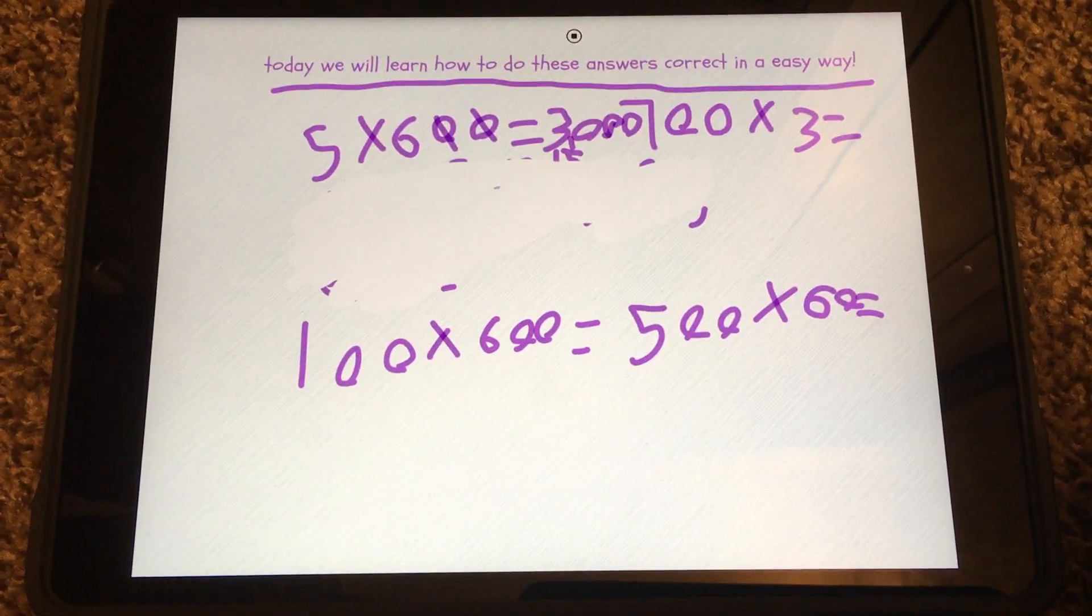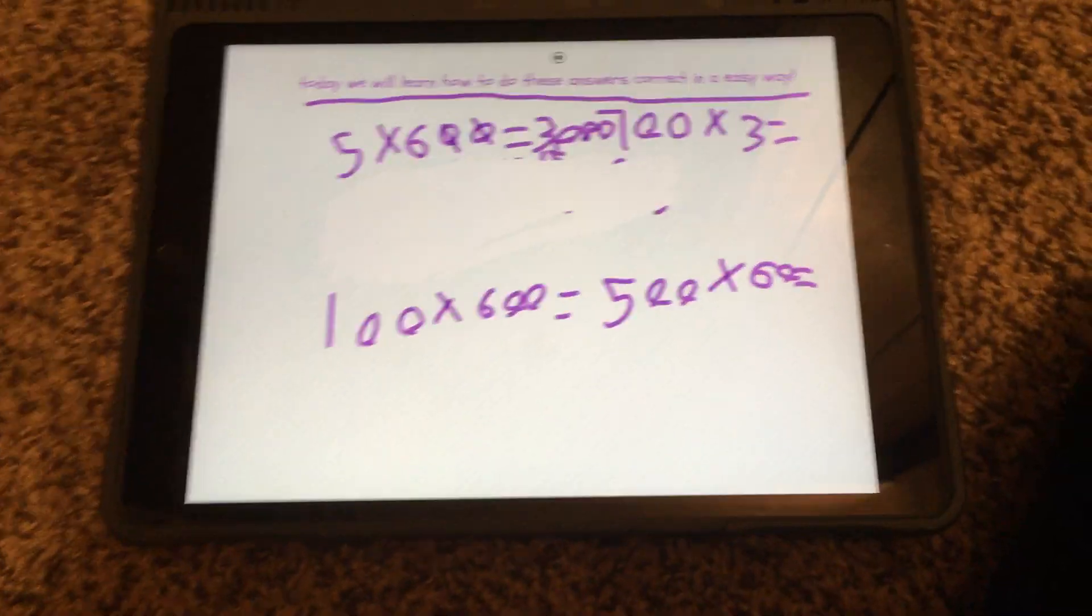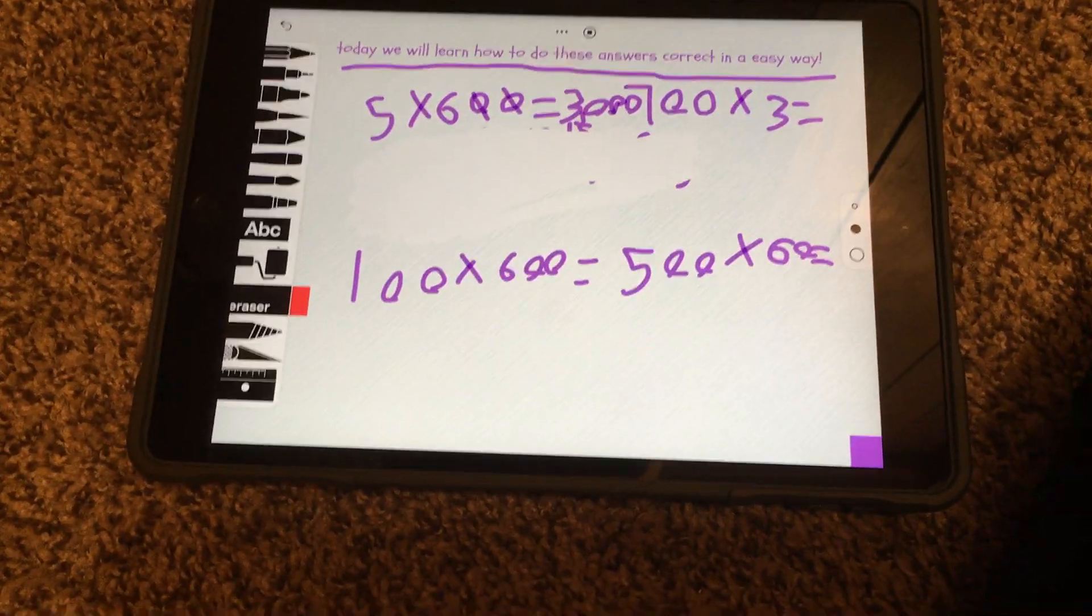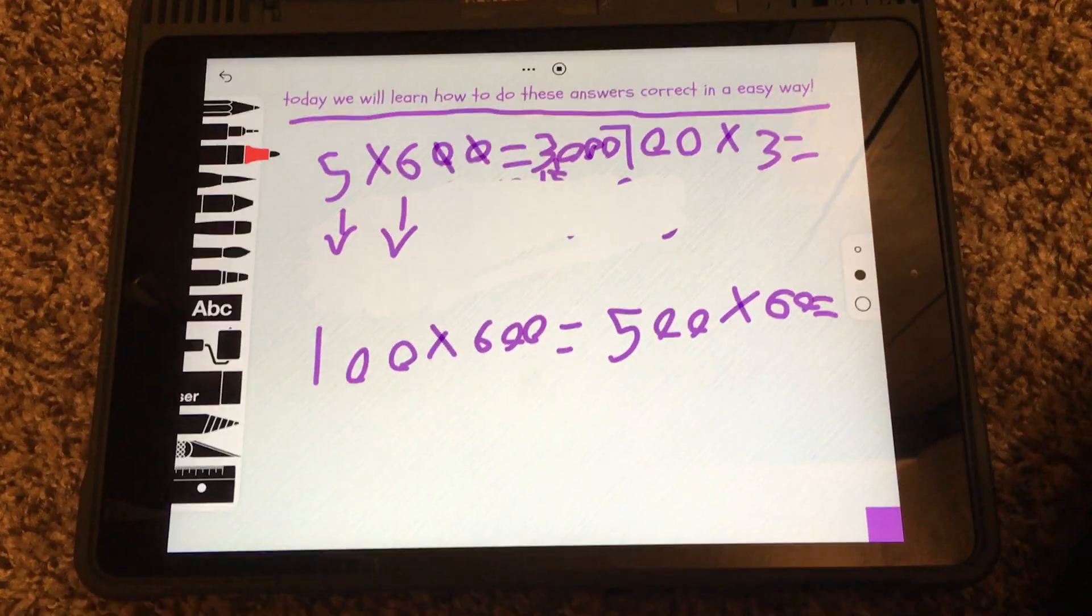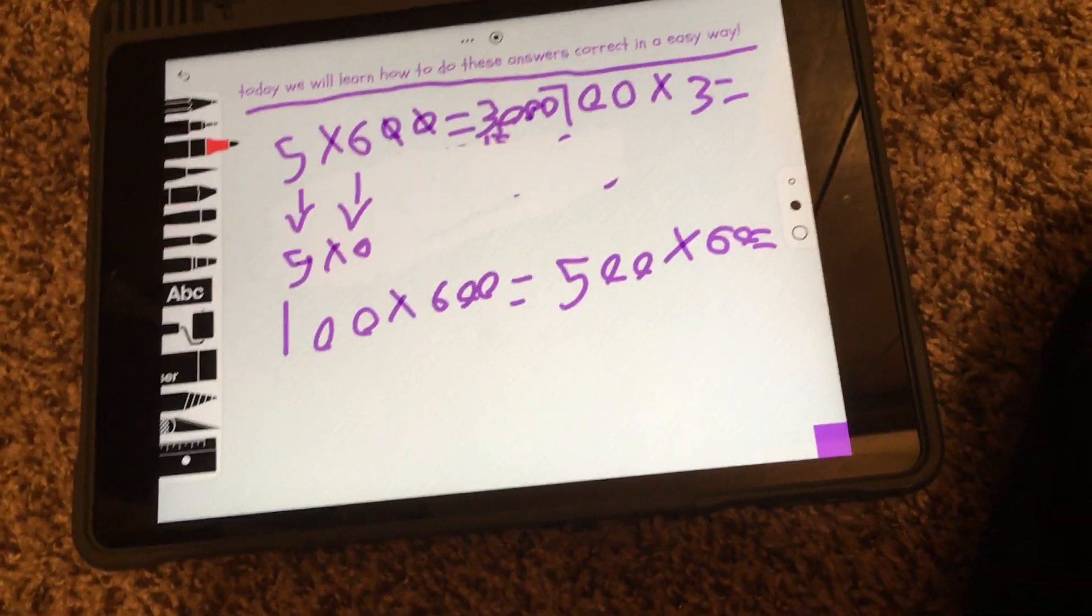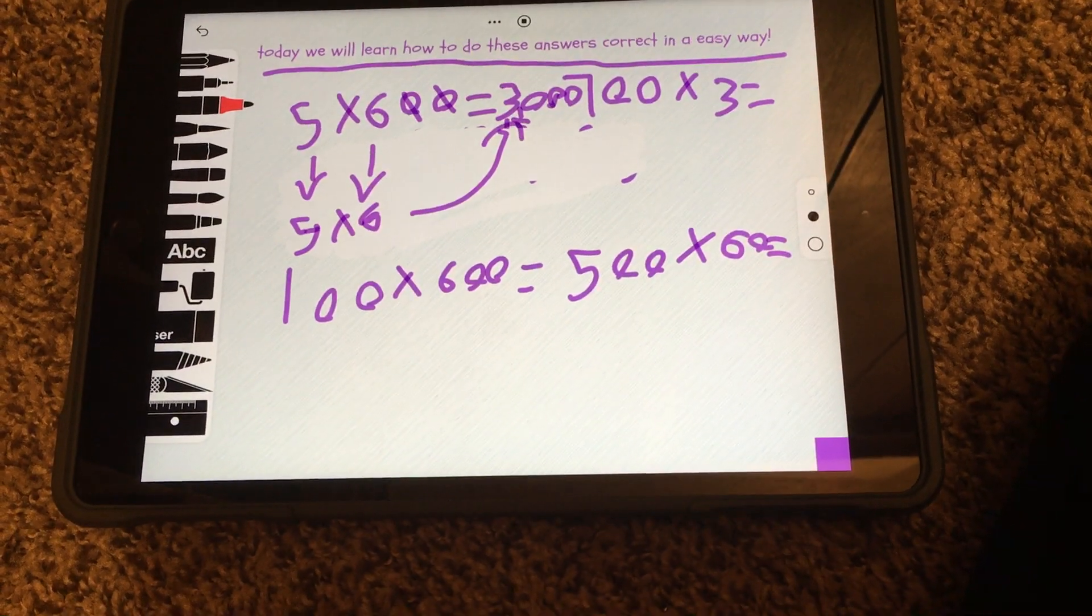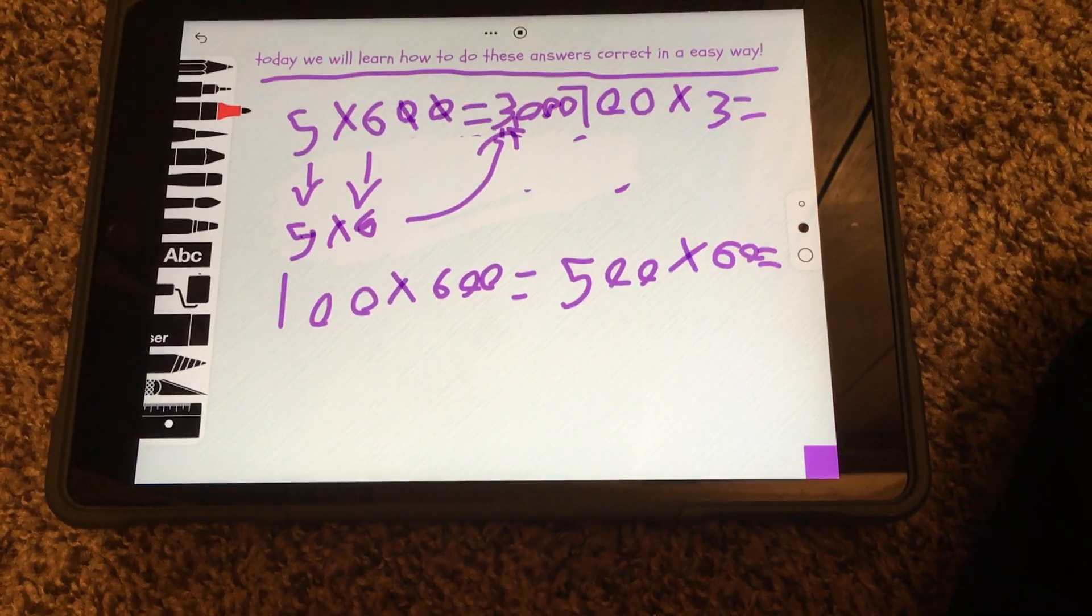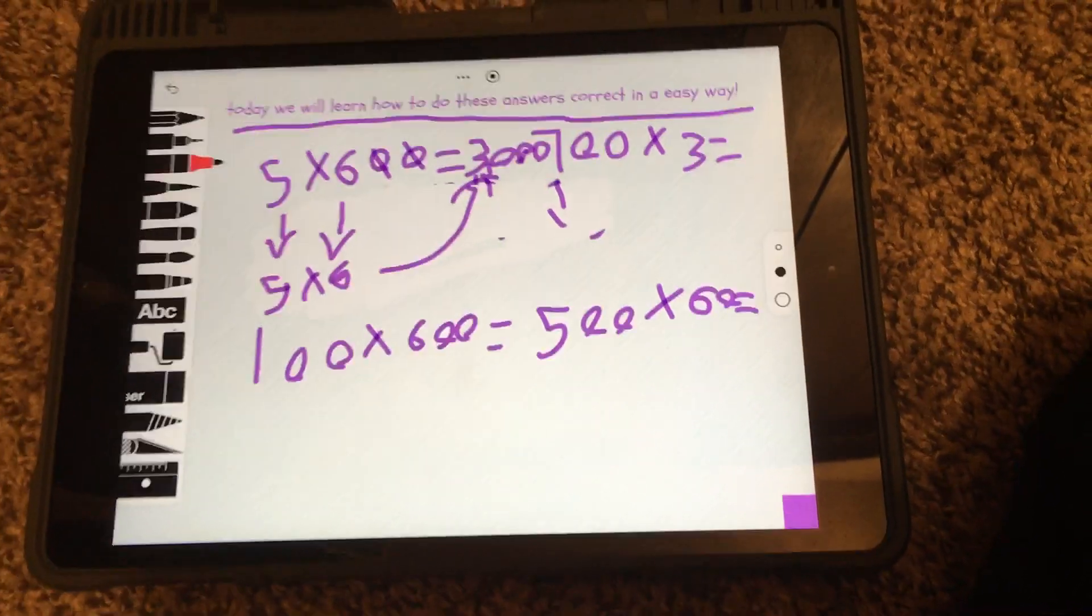Next is 700 times 3. Hold on, let me just write that back real quick so we can remember if we need to look again. 5 times 6. And then we'll do a couple more.